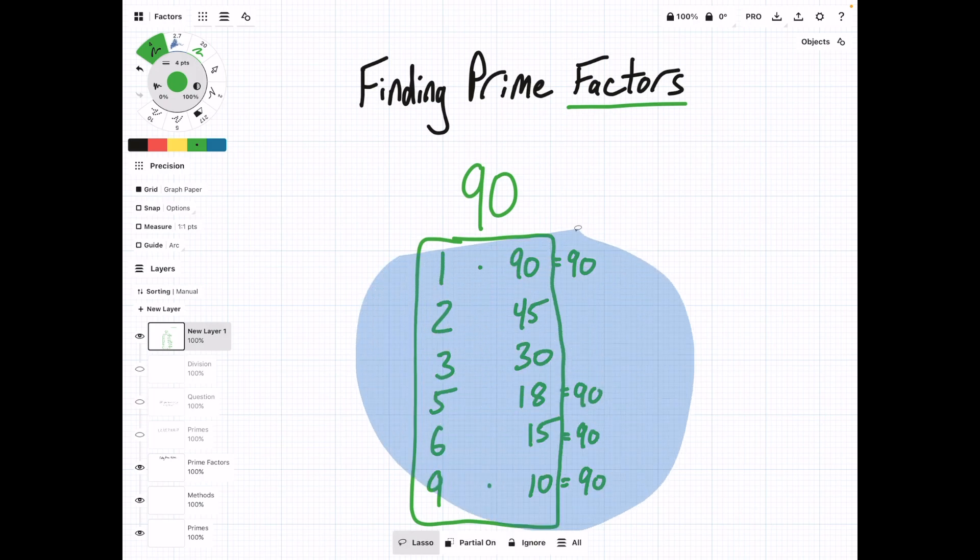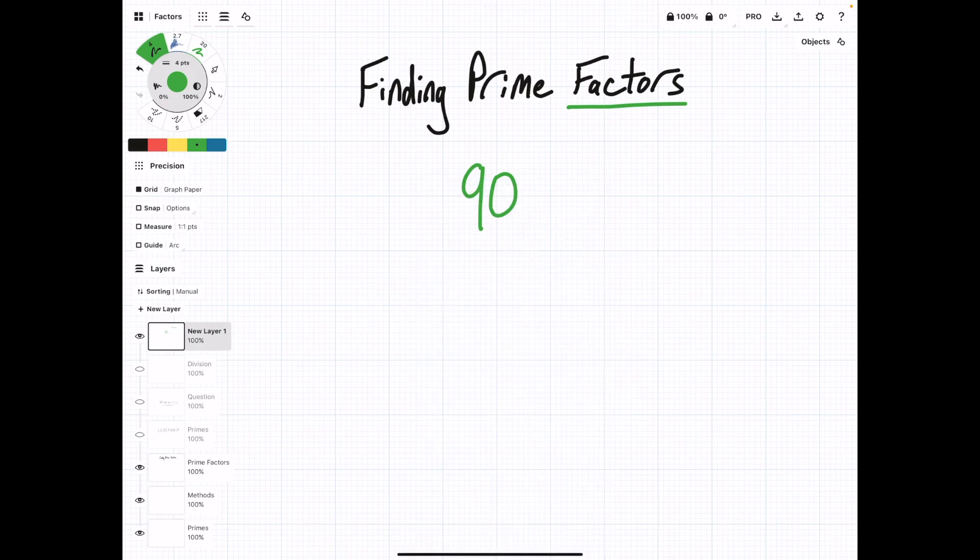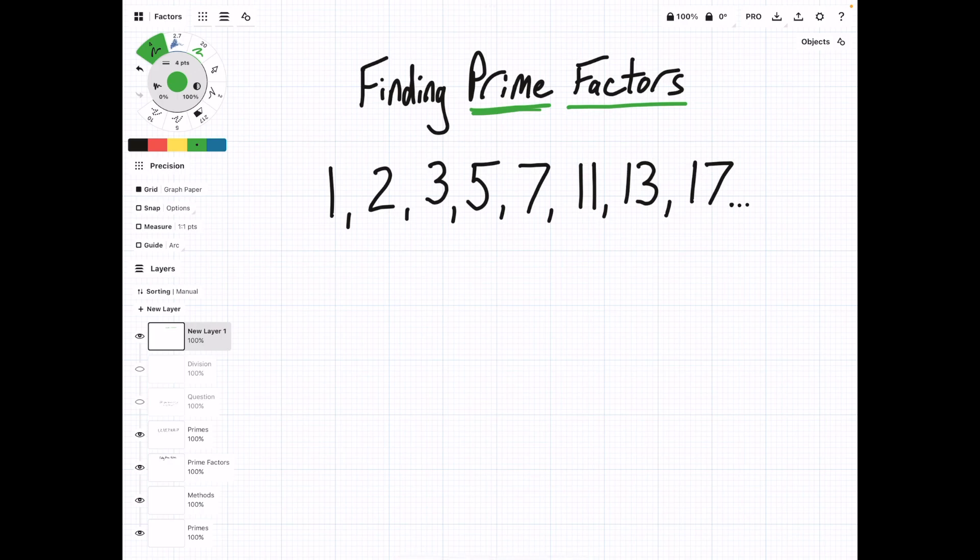So now we want to find the prime factors of 90. So what does that mean? In this case, we have to use the prime numbers: 1, 2, 3, 5, 7, 11, 13, 17, and so on. And we have to answer the question, what prime numbers multiply to my number?